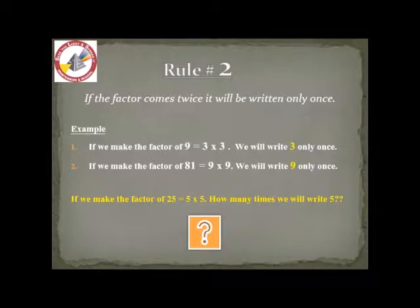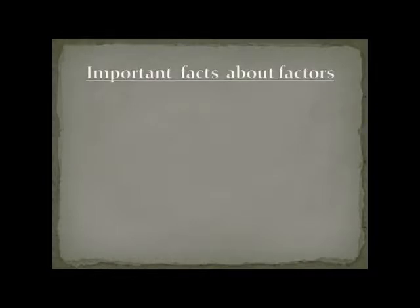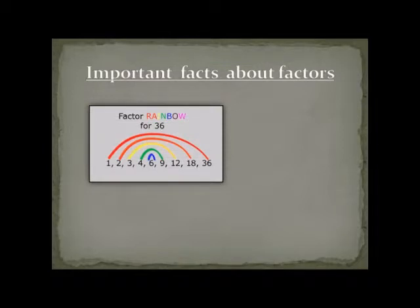Now, there are few facts about the factors. I have made a beautiful rainbow for you. I have taken number 36 in order to explain you. First of all, we will make the factors of 36. 1 times 36 is 36.